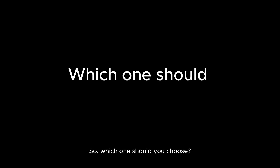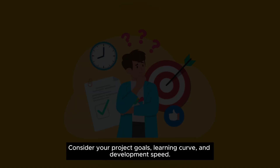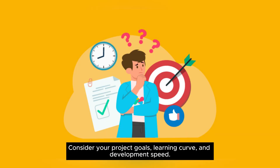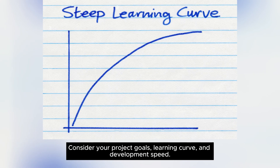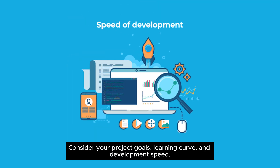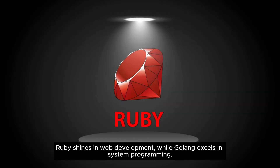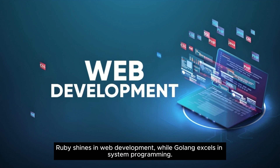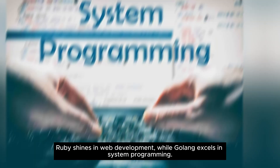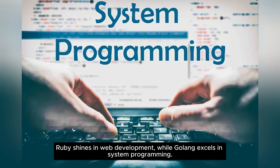So, which one should you choose? Consider your project goals, learning curve, and development speed. Ruby shines in web development, while Golang excels in system programming.